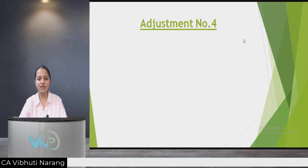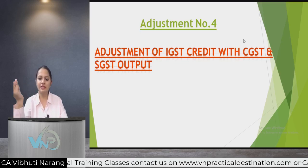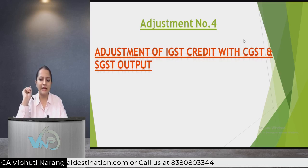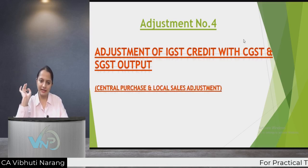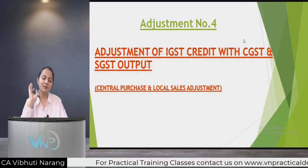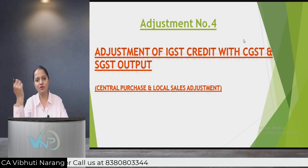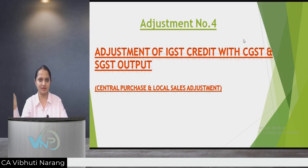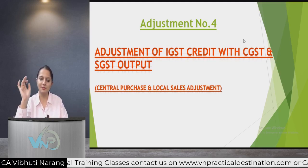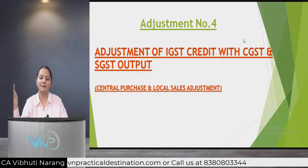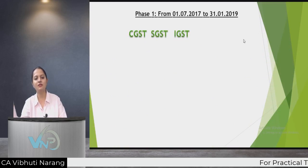Adjustment number four is the most important adjustment — the adjustment of IGST credit with CGST and SGST output, also known as the central purchase and local sales adjustment. This rule has had drastic changes since GST's introduction. I have divided it into three phases. The first two phases are no longer relevant but are covered for comparison. The third phase applies today.